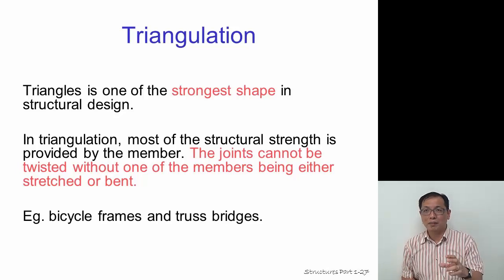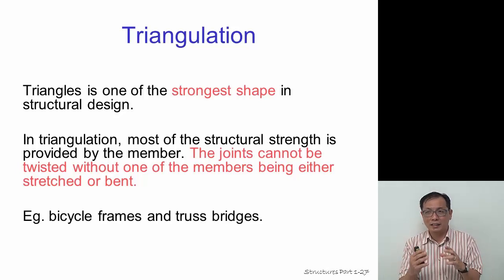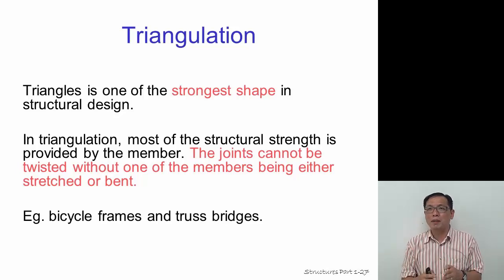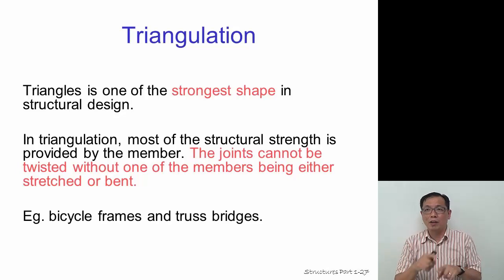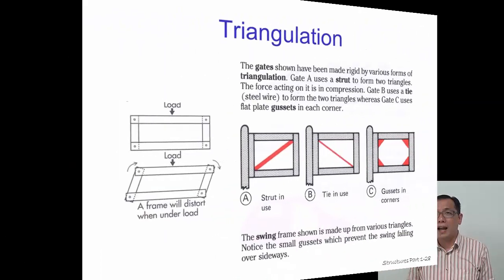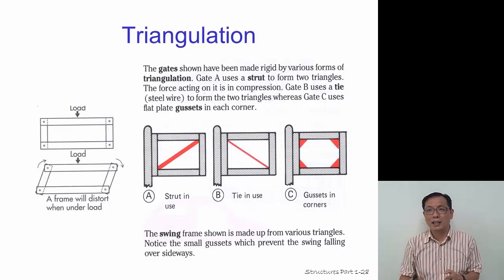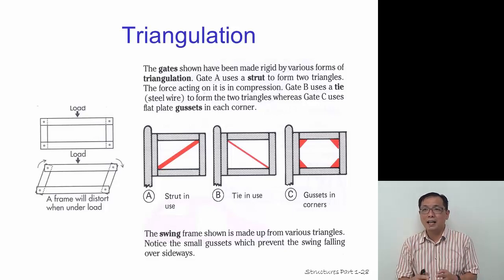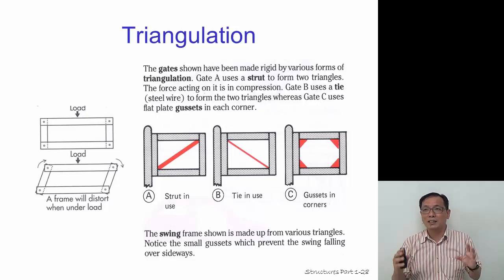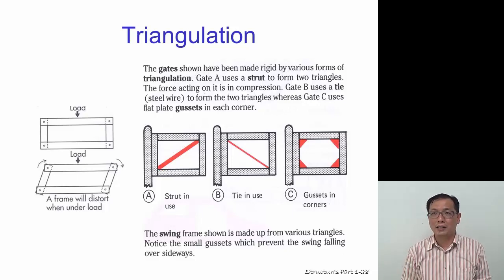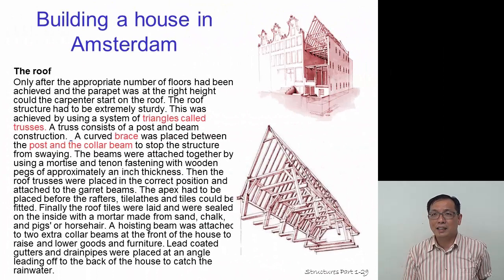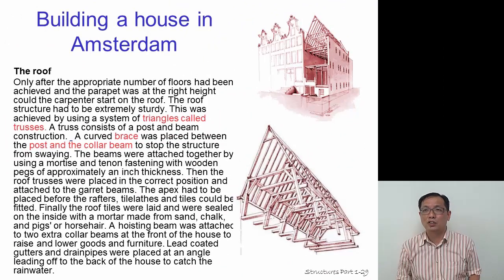Triangulation: triangles are the strongest shape and cannot be twisted without one of the members being stretched or bent. A great example of triangulation is a bicycle frame, which is made of two triangles. Once you have a triangulated strap or tie in place, the whole frame is not easily tilted. Similarly, placing gusset plates on all four sides also prevents straight members from rotating. Triangulation increases the loading capacity of a structure.